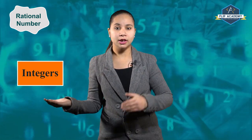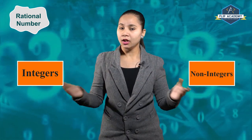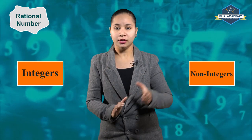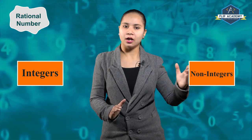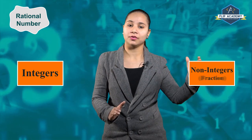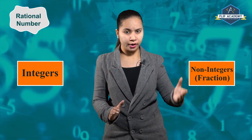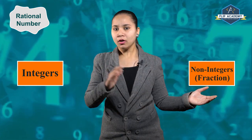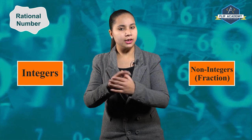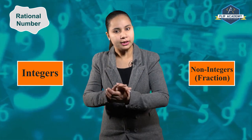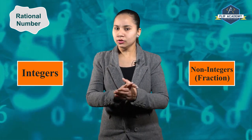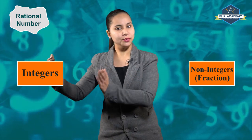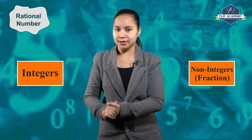Rational numbers are further classified into two parts: one is integers and the other is non-integers. Non-integers are also known as fractions. We discussed fractions in class 8th standard. Now come back to integers.